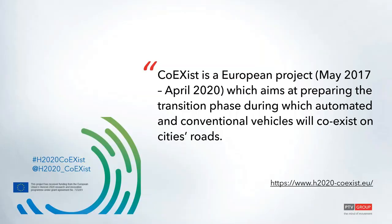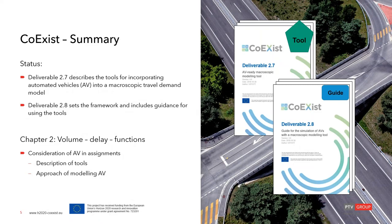The project already runs for more than two years, and work has already been done. We have two deliverables in Coexist that deal with autonomous driving and macroscopic models. Deliverable 2.7 describes the tools developed for macroscopic travel demand models, and deliverable 2.8 describes how these tools can be used. For this webinar, it is not necessary to be familiar with these deliverables. We focus on one part called the volume delay function — the incorporation of autonomous vehicles in assignments and evaluation of its effects.